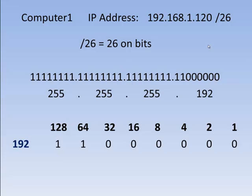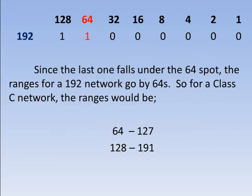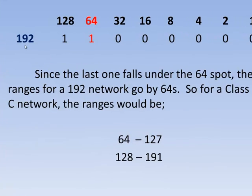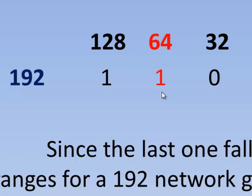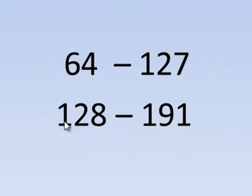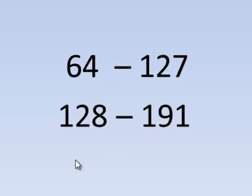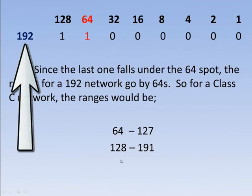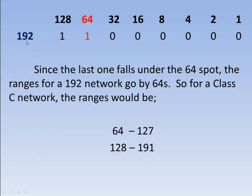Once you know the subnet mask, you can figure out the range. When you have a subnet mask of 192, wherever the last 1 falls is what your ranges go by. So the first range starts at 64, the next range is 64 added to that, and the next would be 192. However, you can't use 192 or higher because that is your subnet mask. So the two possible ranges are 64 to 127 and 128 to 191. This is for a Class C — using 255.255.255.192, the ranges go by 64s.